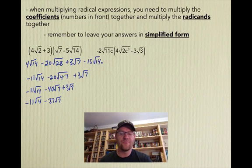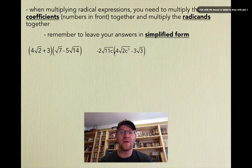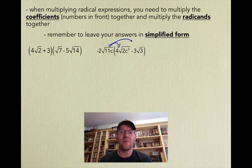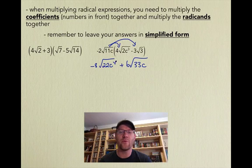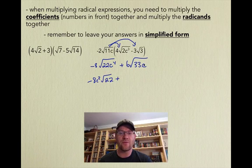Our next example is negative 2√(11c) multiplied by 4√(2c³) minus 3√3. We multiply the outside term by both terms inside, getting negative 8√(22c⁴) plus 6√(33c). We can't simplify √22, but we can simplify c⁴ — that is just c². So we get negative 8c²√22 plus 6√(33c), since we can't simplify 33 or c.